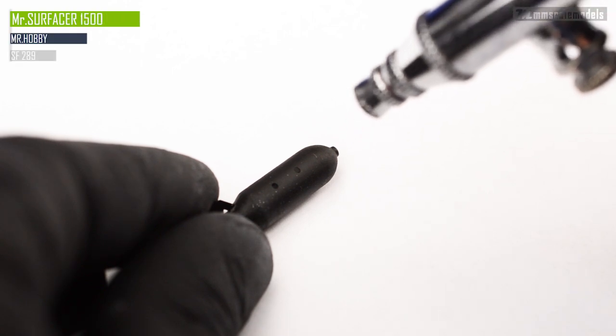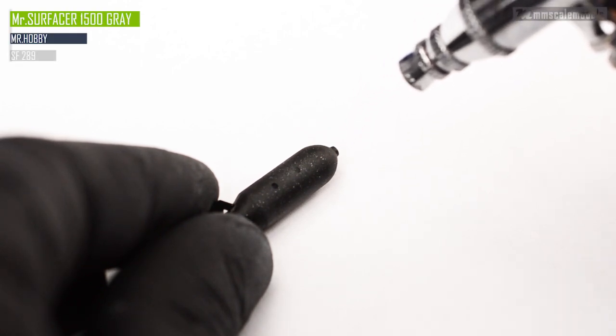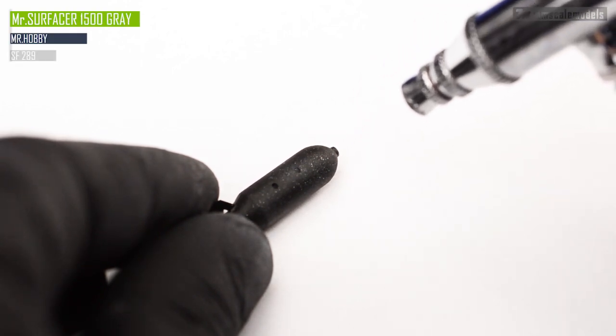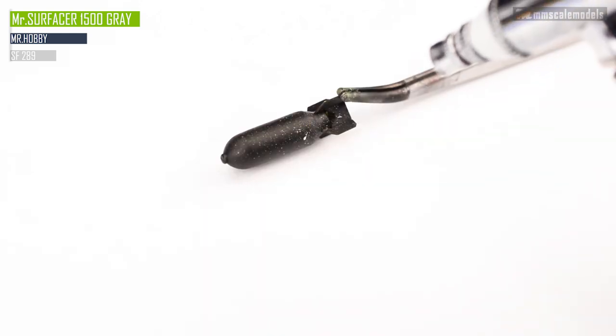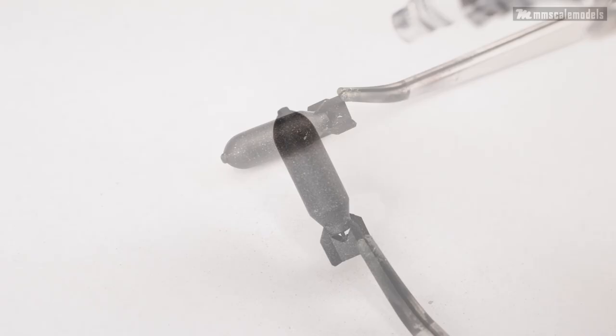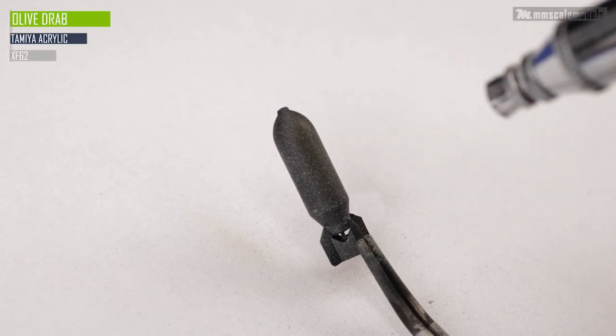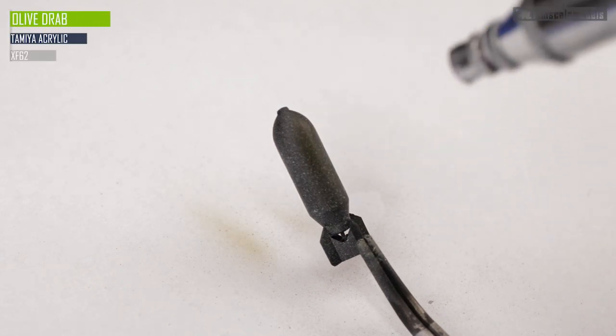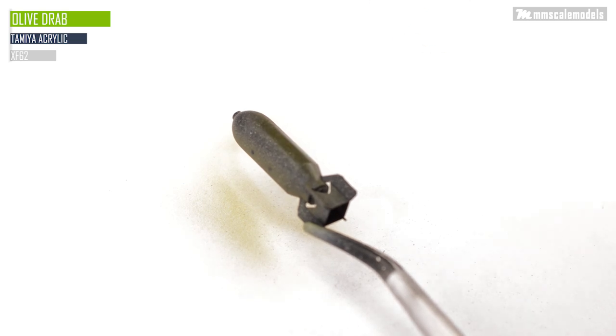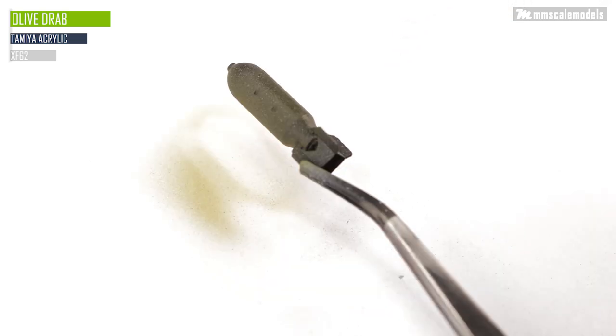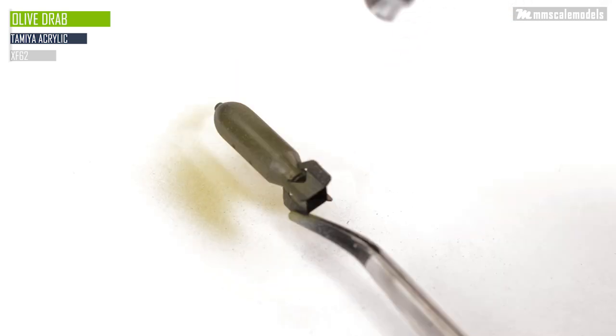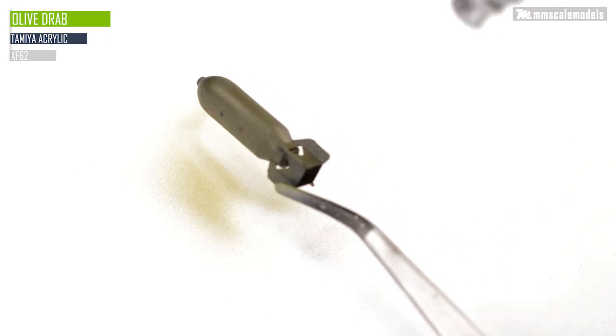After a coat of black primer I speckled the bombs with grey surfacer using the airbrush. A cool technique I learned from Dux Models channel. Then I started layering Tamiya's XF62 olive drab until I was happy with the opacity. The goal is to have a nice color but also to have a hint of the speckling underneath.